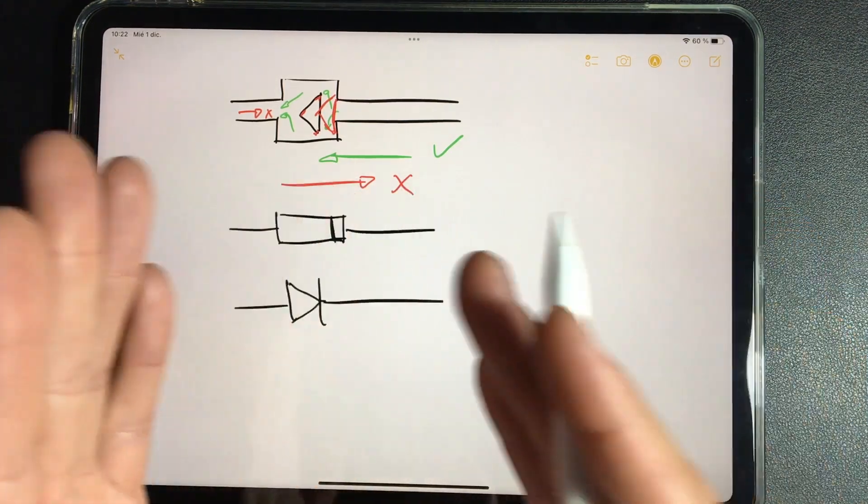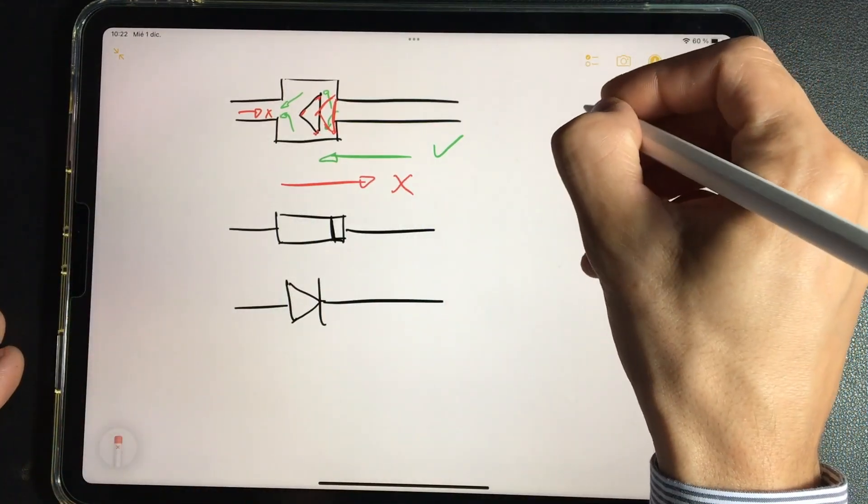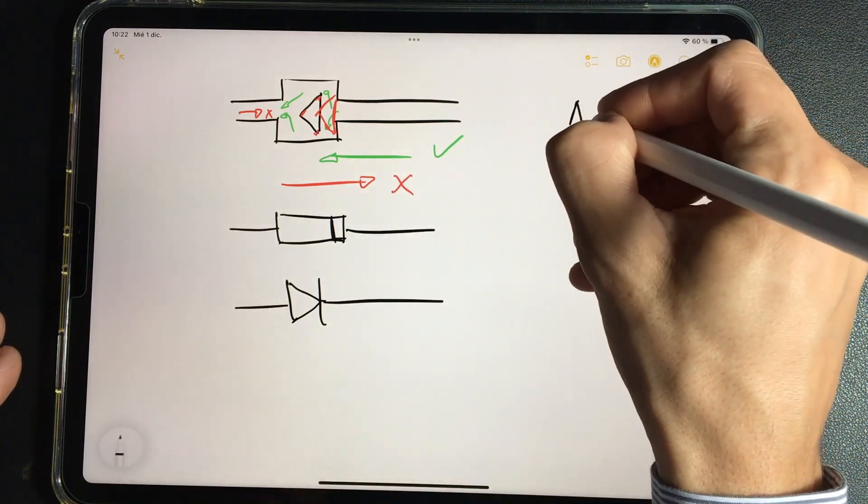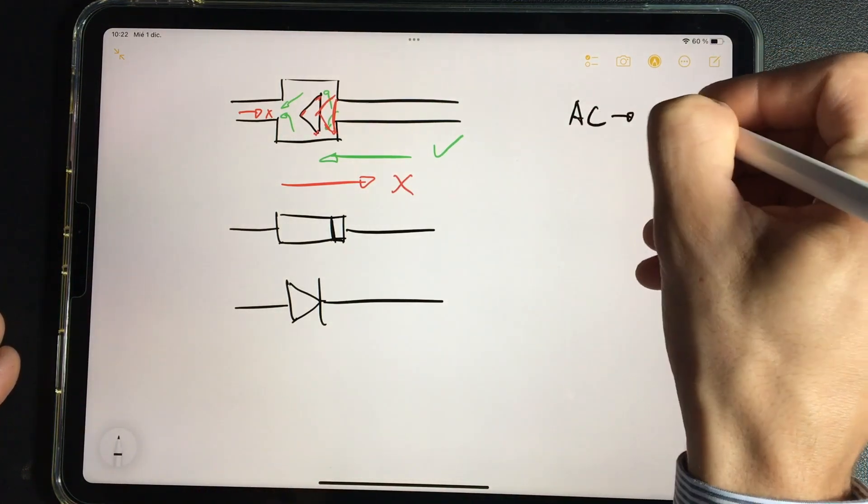This is the necessary element to convert alternating current into direct current, producing the rectification that we are looking for and needing in all electronic boards.